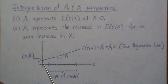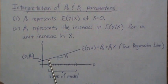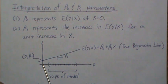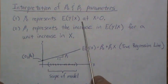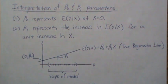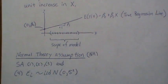Even the y-intercept may be meaningless if x = 0 is not within the scope of the model — the line may follow a trend in our range but then go to zero or change drastically just outside it. So you must be careful to interpret beta parameters only within the scope of the model.